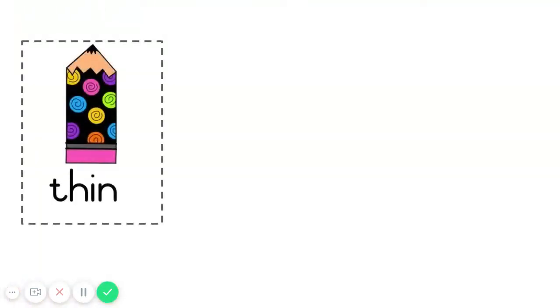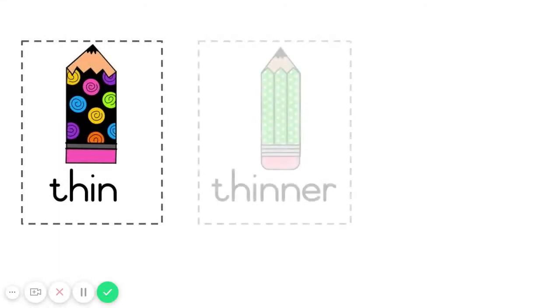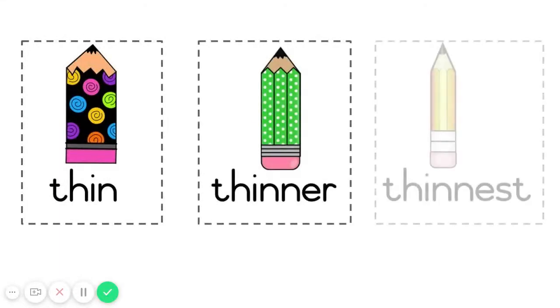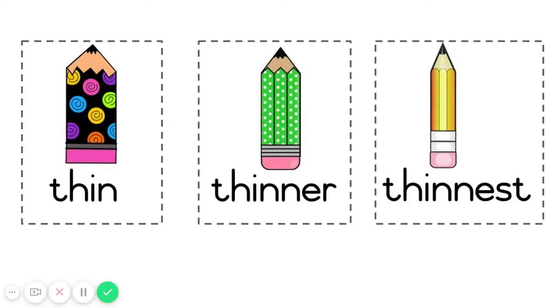Okay, let's have some examples. The first pencil is thin. The next one is thinner. And the last pencil is the thinnest one.